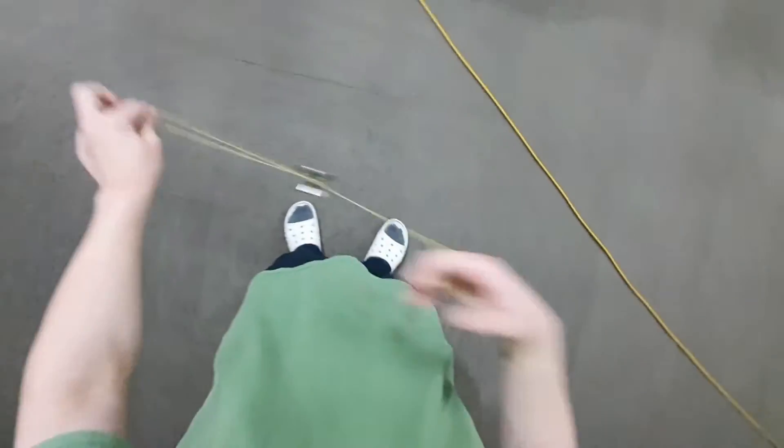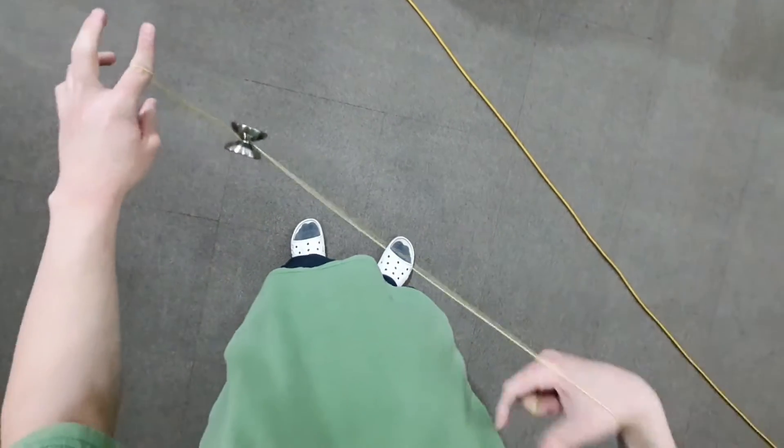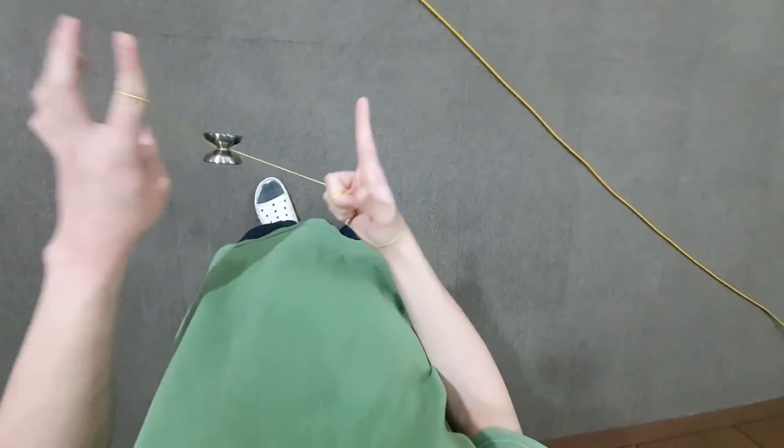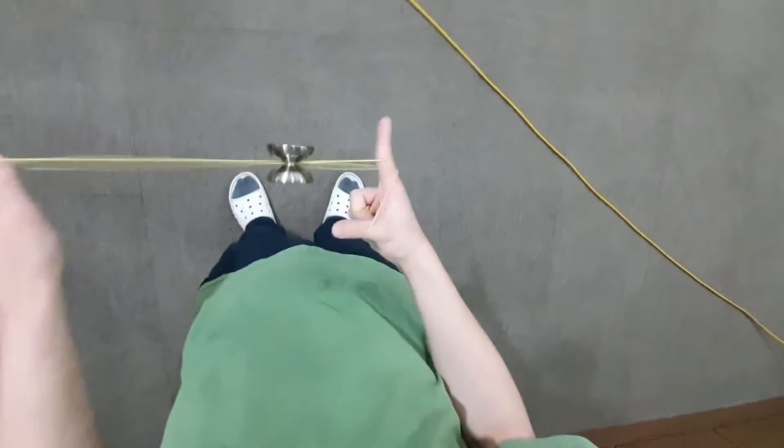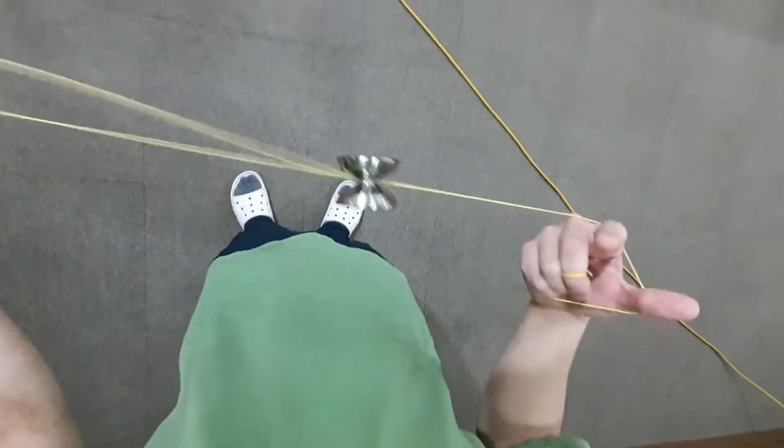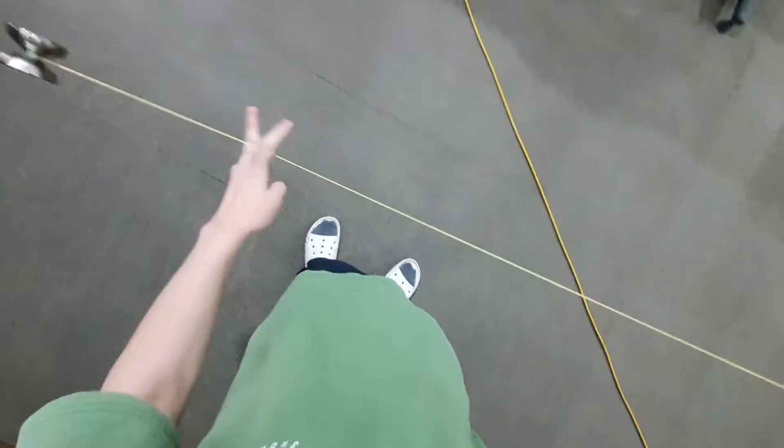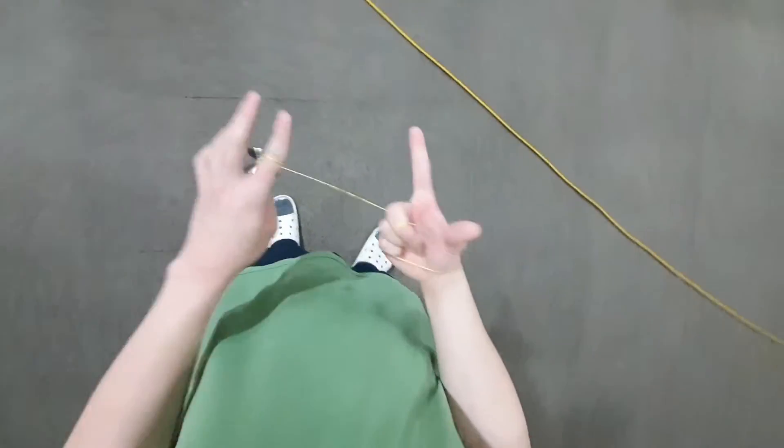So you want to make sure that the yo-yo is barely clearing your finger and just roll over. You can either choose to miss, you can either choose to land in the front or the back. It doesn't really matter. As long as the string rejects, you're going to get that magic drop.